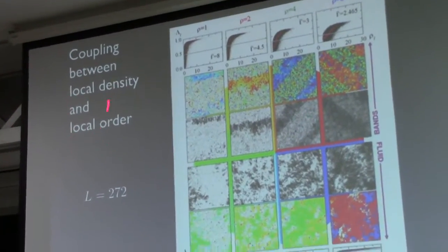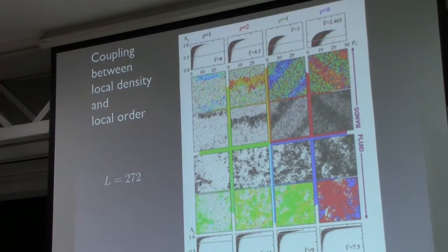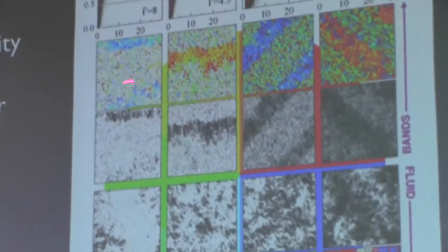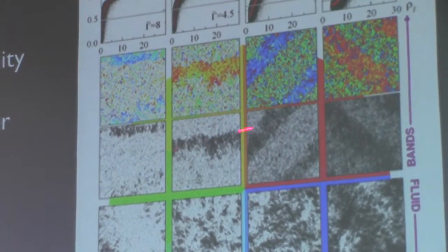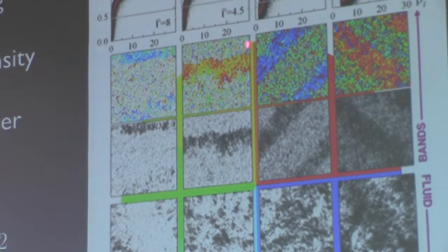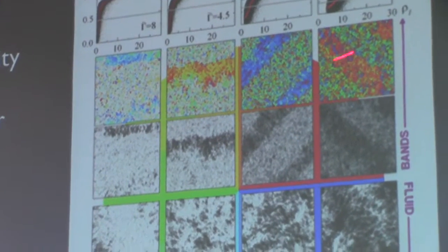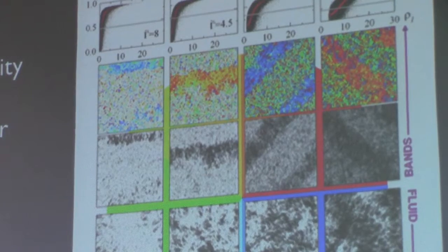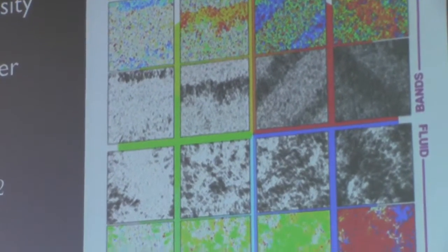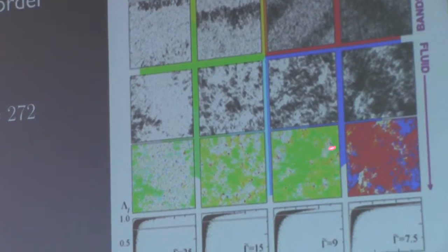We also get something known to out of equilibrium order phases, which is strong coupling between local density and local order. The more dense a region is, the more order it gets. Here in the middle we have density fields, snapshots of the density of the system, and this would be the direction fields. For this band, almost all particles have a color between yellow and red, surrounded by a gas of disordered particles that can point almost in any direction. This happens close to the critical point on the order side. As you increase the aligning rate, these structures disappear and you get a polar liquid where all particles move more or less in the same direction.